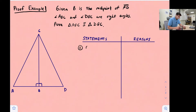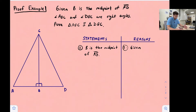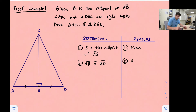Statement one: B is the midpoint of AD. The reason is that this was given information. Midpoint means point B bisects segment AD, creating two congruent segments. So statement two: segment AB is congruent to segment BD. The reason is the definition of a midpoint. Now we have two sides that are congruent.